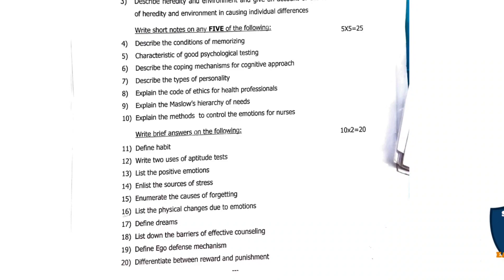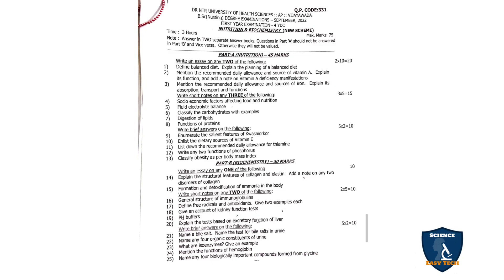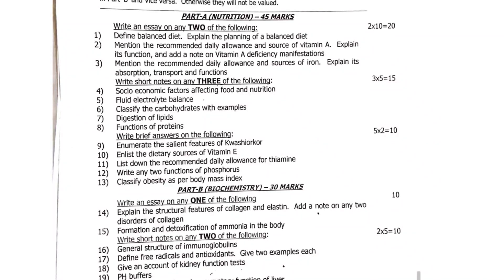These come under two marks each. Next is Nutrition and Biochemistry, question paper code 331. Part A is Nutrition carrying 45 marks and Part B is Biochemistry carrying 30 marks. Essay questions — out of three, answer any two, 2 into 10 equals 20 marks. First question: define balanced diet and explain the planning of a balanced diet. Second question: mention the recommended daily allowances and sources of vitamin A, explain its functions and add a note on vitamin A deficiency manifestations.